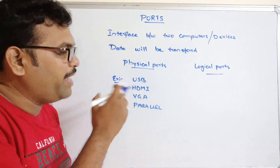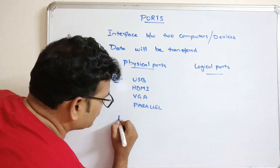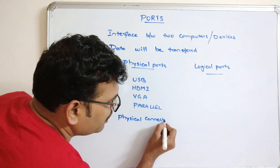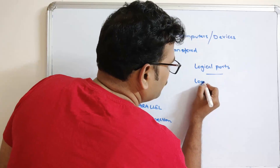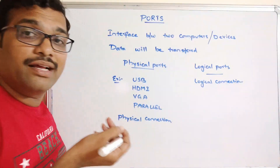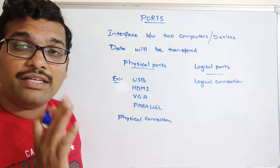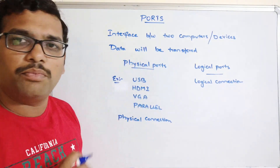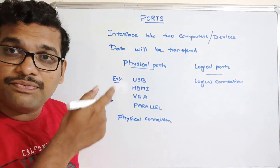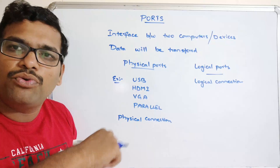A logical port means a logical connection — there is no physical connection involved; it is a logical connection from one computer to another. Data can be transferred using either physical ports or logical ports. For example, if you connect a monitor to the CPU, the data will be transferred through that physical VGA port — data goes from the CPU to the monitor through the VGA port.